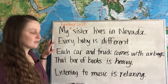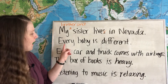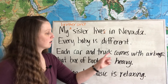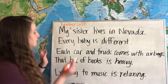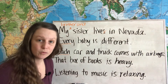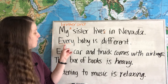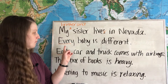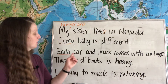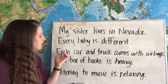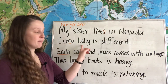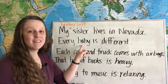These two examples kind of go together. We have: every baby is different, and each car and truck comes with airbags. These words — every and each — have a special rule. Every and each will always come together with a singular noun. Every baby. We cannot say 'every babies' — no.